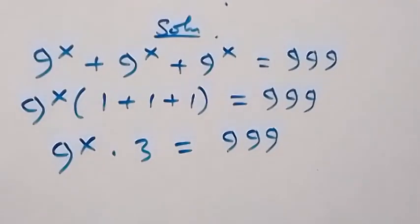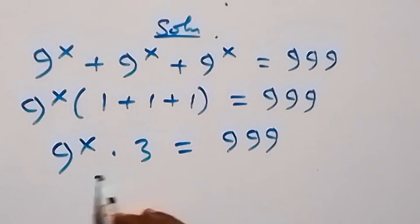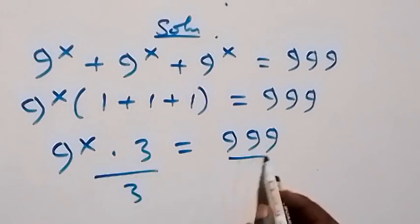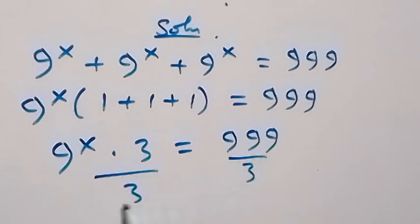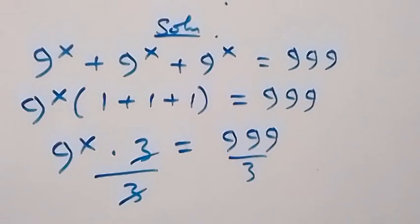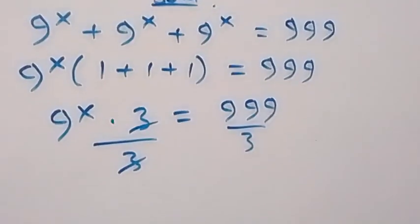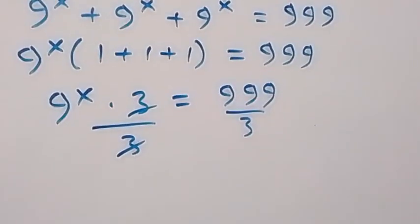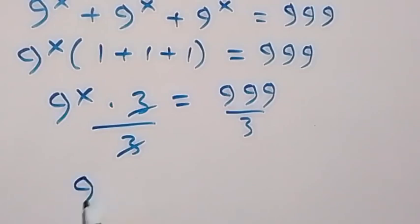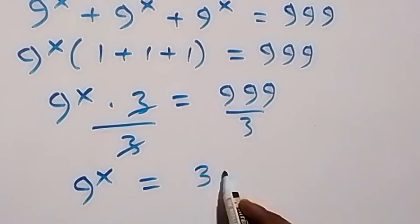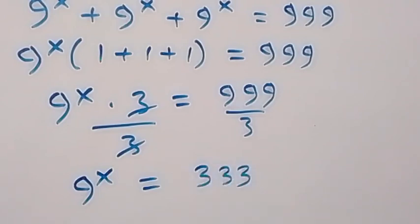From here we can divide both sides by 3. This 3 cancels out that 3, and we have 9 raised to power x equals 3.33.